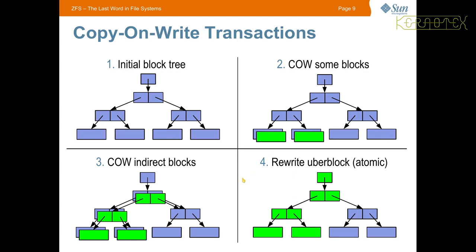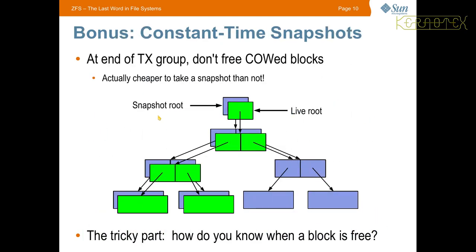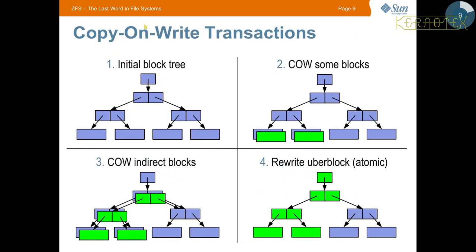If the Uberblock wasn't updated, it would still be pointing at the original data, so the initial tree would still be the valid state. It's not until that Uberblock gets changed that the update is made — all the preparation is done beforehand, and the update is only visible when the Uberblock is changed. That is how consistency is retained. If there was a power cut mid-update, after rebooting the Uberblock is still pointing at the original data — the file system is in a consistent state, no file system check is needed, and you only lose a fraction of a second of data. The copy-on-write: the copying is copying the blocks that need to change, and the write is the final writing of the Uberblock.